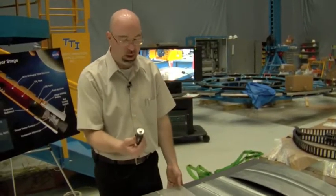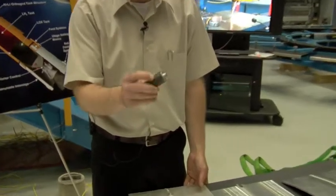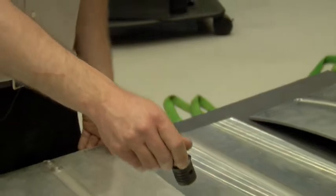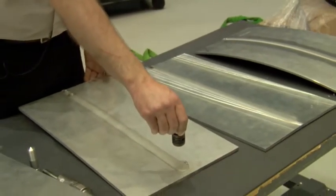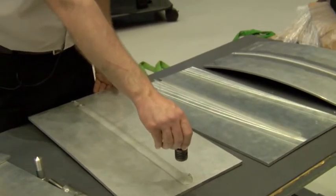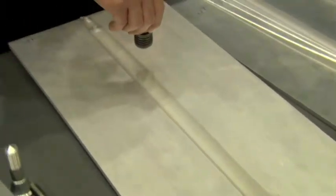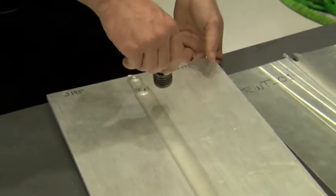The way it works is we have what we call a pin tool. This is a pin tool. And this tool is rotated at several hundred RPMs. It's plunged into the surface of a work piece with tens of thousands of pounds of force. It's then traversed along this weld joint while it's rotating until it gets to the end of the weld. And then we retract and that's the end of the weld.